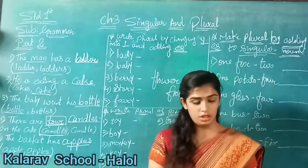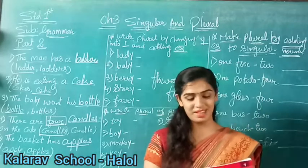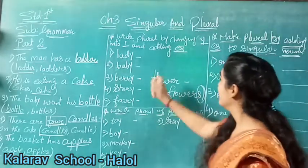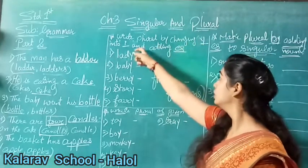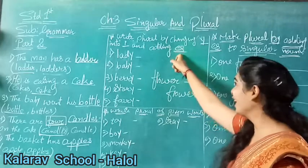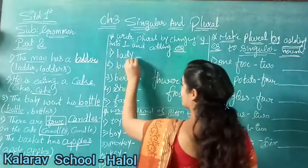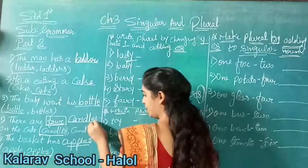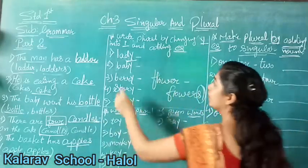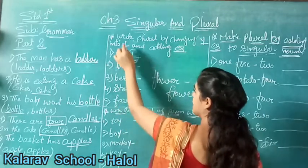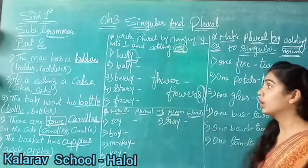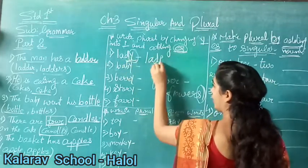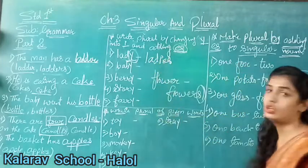Clear up to here. Now see page number 14 - singular nouns that end with a consonant and Y form their plural by changing Y into I and adding ES. Write plural by changing Y into I and adding ES. First number is lady. We have to write I instead of Y, then add ES. So lady becomes L-A-D-I-E-S. Your answer will be ladies.